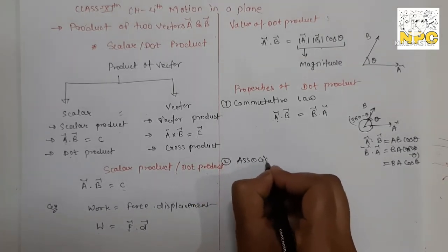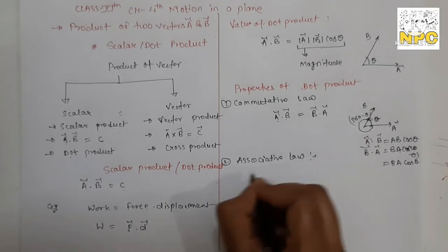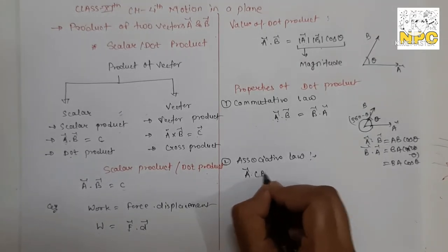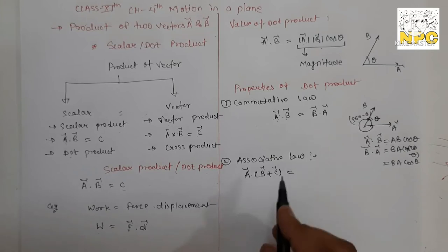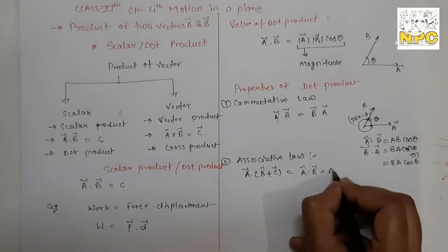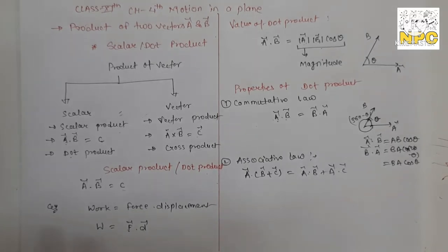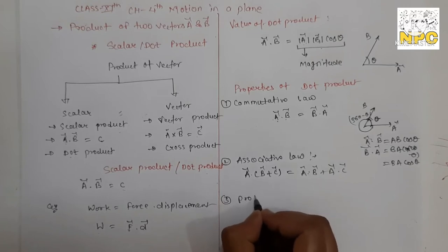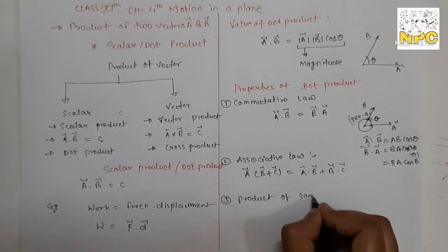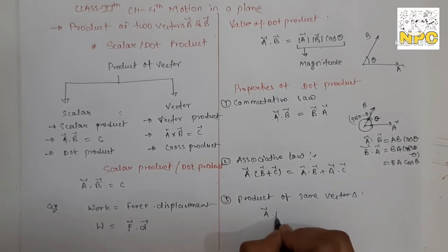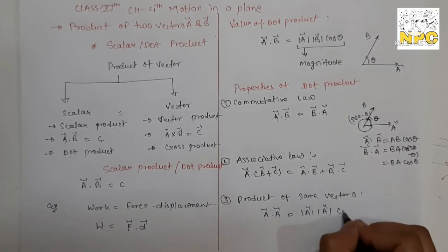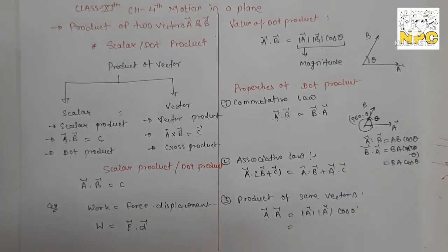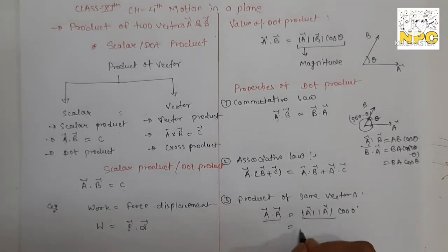The second property is the distributive law. According to this, if you have three vectors a, b, and c, then a dot (b + c) equals a dot b plus a dot c. The third property is the product of the same vector: if you take the dot product of a vector with itself, a dot a, then the result is the magnitude of a squared, because the angle between the same vectors is zero and cos zero equals 1.